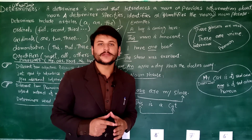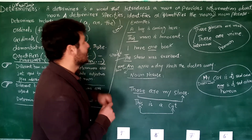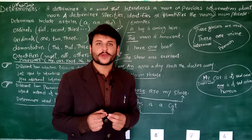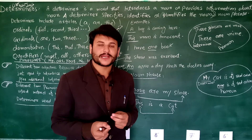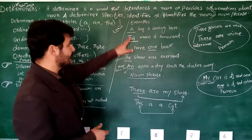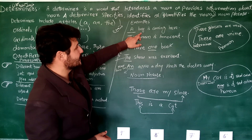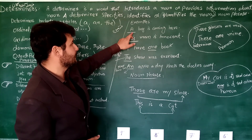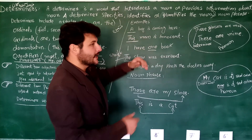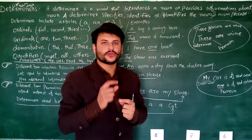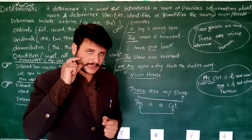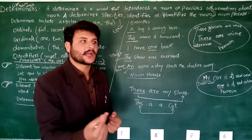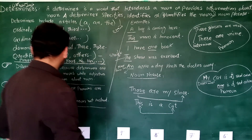Ya istimal huwa 'a boy is coming here'. Agar hum yeh kehen ki 'a' jo hai yeh article hai, to yeh baat bhi bilkul theek hai - hum samajhte hain ki yeh article hai. Lekin jahan par determiner ki baat ho, determiner ki definition ho, the very nature of determiner ho - to determiner jo hai faisala karta hai, identify karta hai, introduce karta hai, specify karta hai kisi noun ko. To yahan par is ne noun ko specify kiya hai, noun ko identify kiya hai - is liye hum is ko determiner ki layer lenge. The letter 'a' - it gives us the very specification: how many - one larka. To yahan par 'a' as a determiner hai.